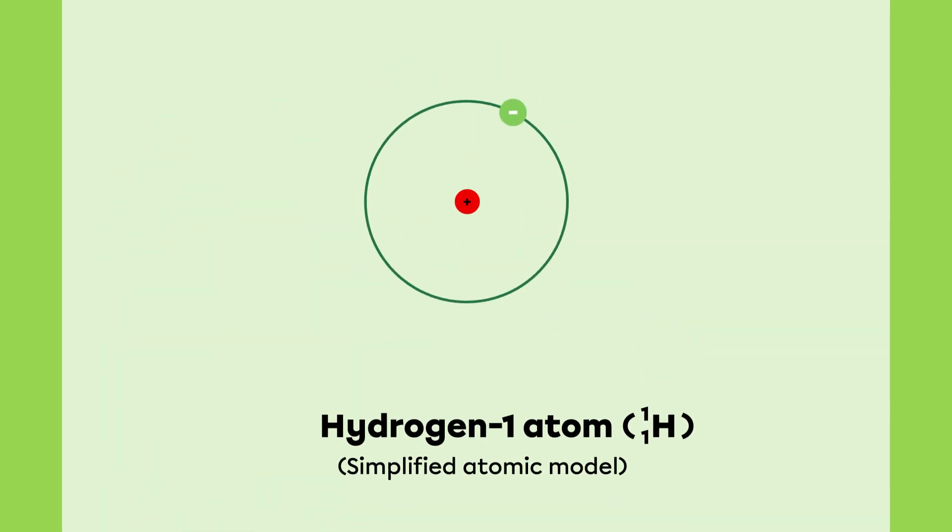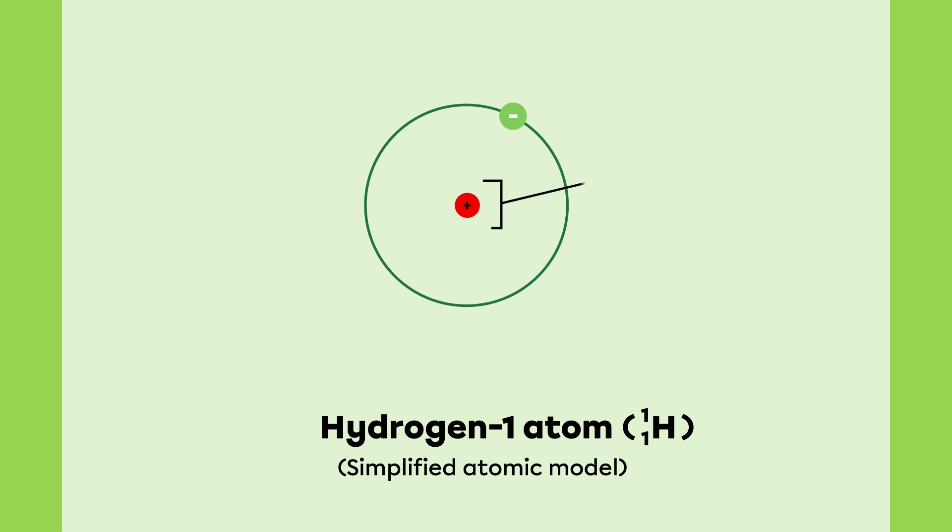Not all atoms have neutrons. For example, the nucleus of the hydrogen 1 atom only contains 1 proton.